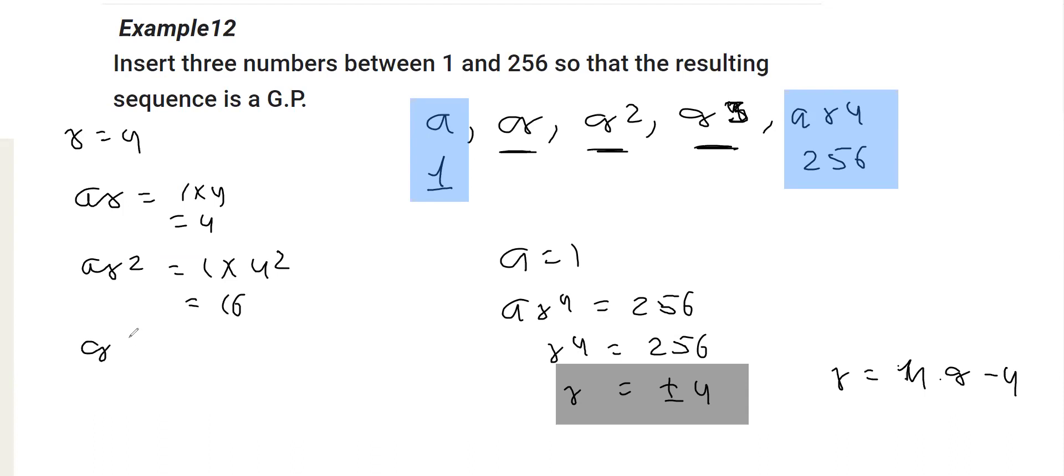And finally, AR raised to the power 3, which is 1 into 4 raise to the power 3. That's 1 into 4 cube is 64, right? So, you may verify that the next term should give you, that is this one, that is the fifth term will give you 256.